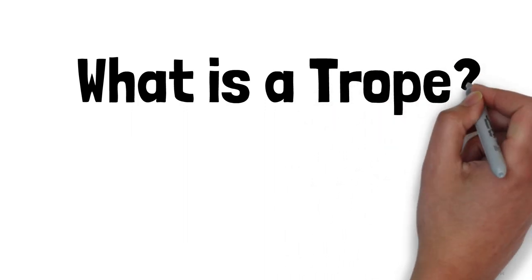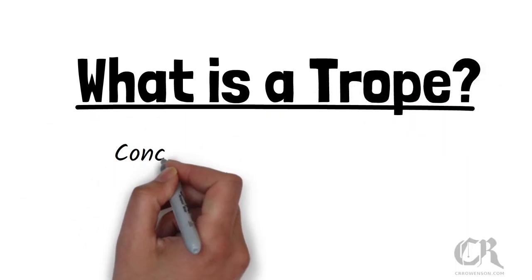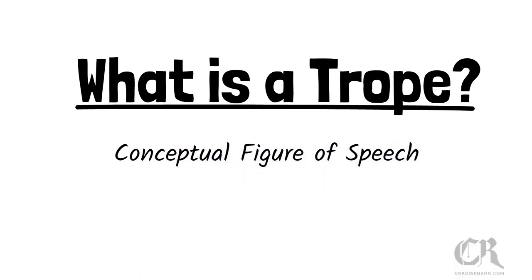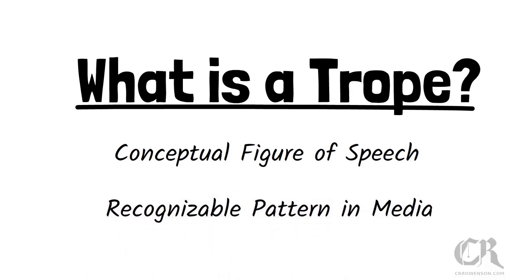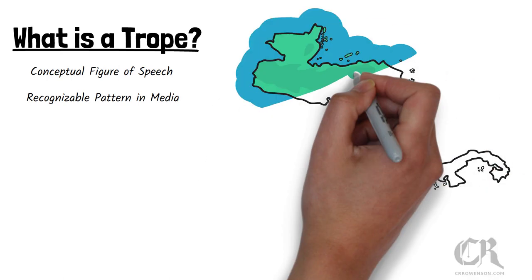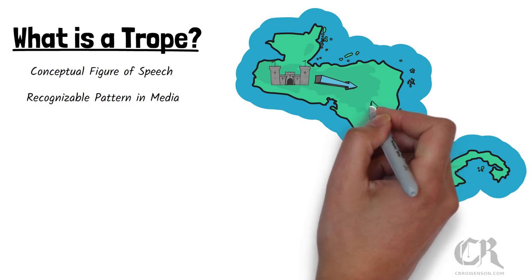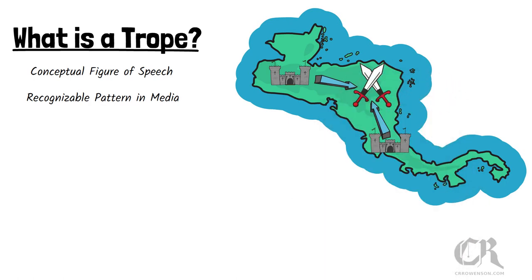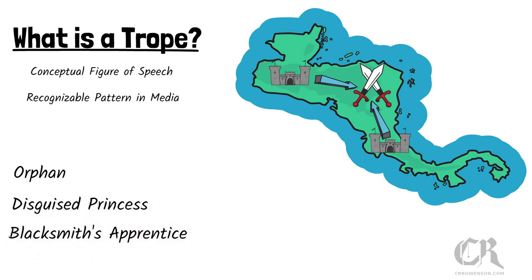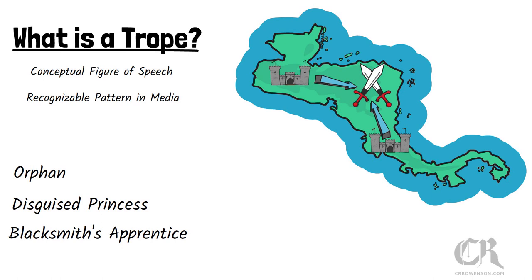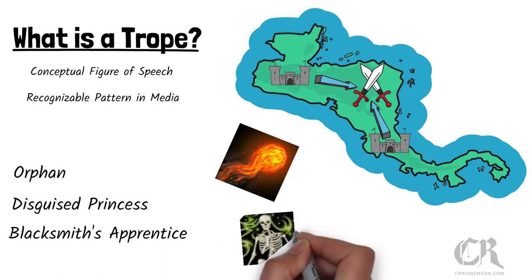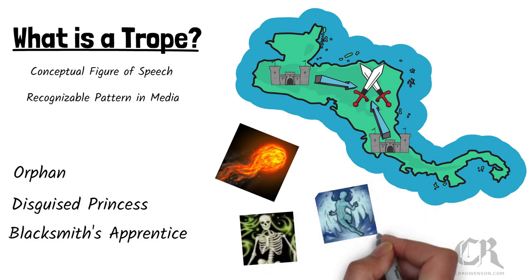First things first, what is a trope? It's best to think of these as conceptual figures of speech. They aren't actually idioms or turns of phrase or anything like that, but they are ideas and patterns that occur frequently inside a specific story type, genre, medium, game, or pretty much anything. They can be a particular setup for your story — one nation at war with another, civil war going on. It can be a common twist for the genre or even a popular character backstory or character archetypes. It can be literally anything that exists in your story, and it's the exact same for our magic systems.